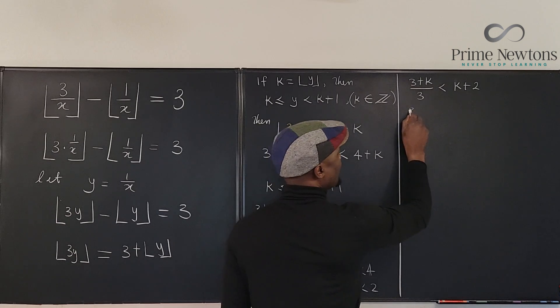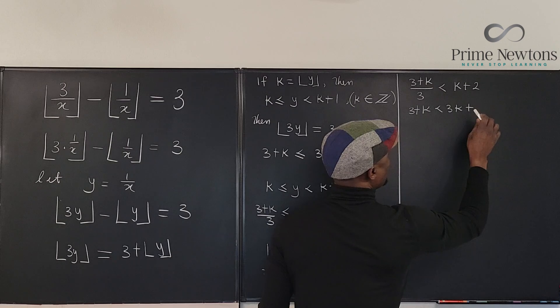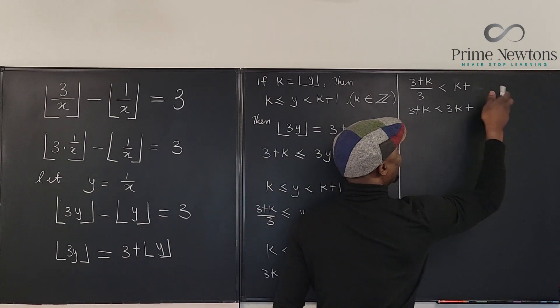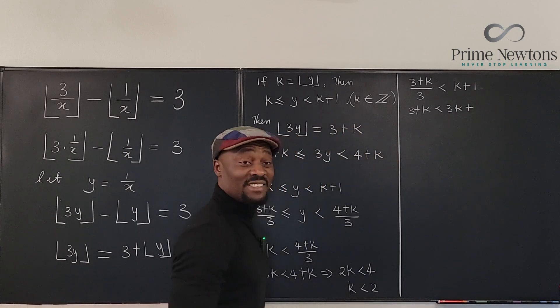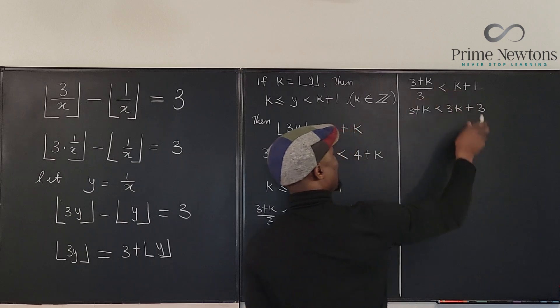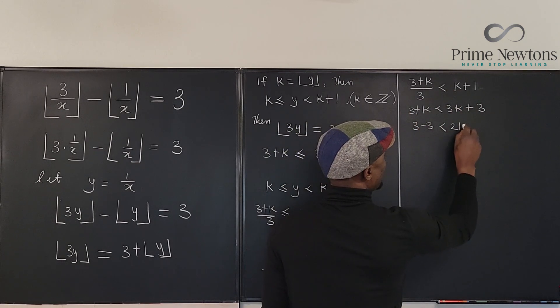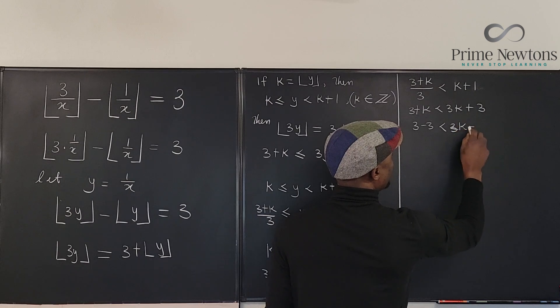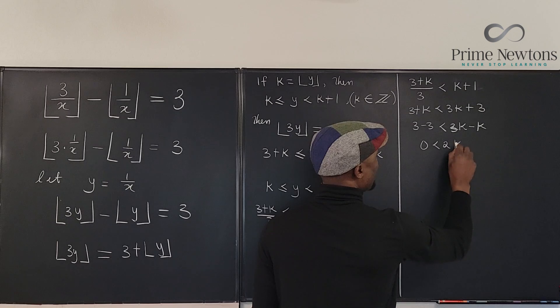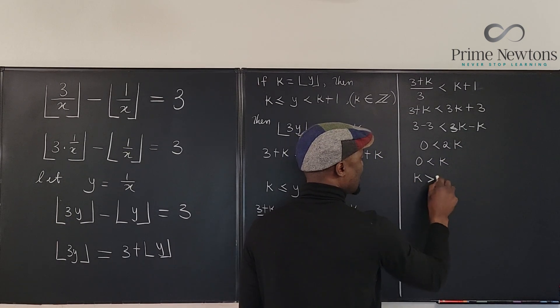So if we solve for k here, we have 3 plus k is less than 3k plus... where did I get k plus 2? k plus 1? Come on! What was I thinking? Okay, 3k plus 3. Okay, now move the 3 here, you're going to have 3 minus 3 is less than 3k minus k. So you have 0 is less than 2k, which means 0 is less than k, which means k is greater than 0.